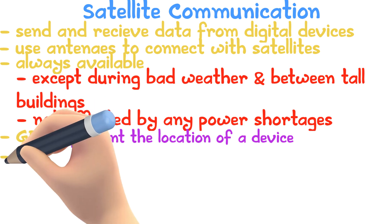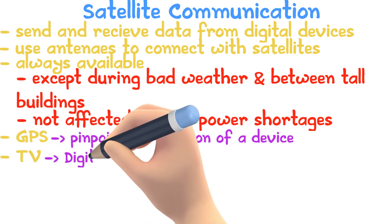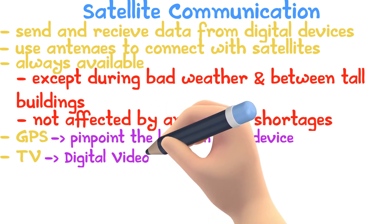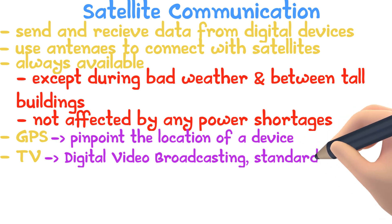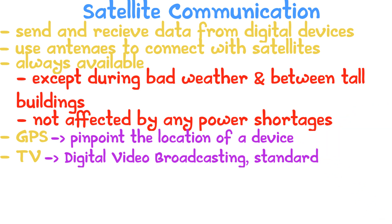Digital Video Broadcasting is the standard method of broadcasting television via satellite. A signal is sent from an antenna by the broadcaster to a satellite, which sends the signal back to Earth through an installed antenna on a user's house. The antenna sends the signals to a set-top box that decodes the signal and sends it to the TV.